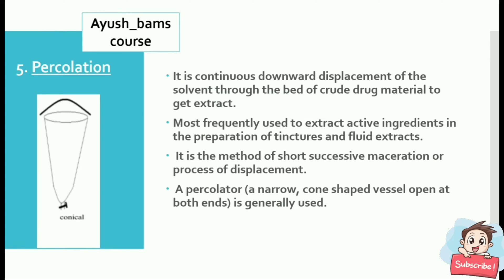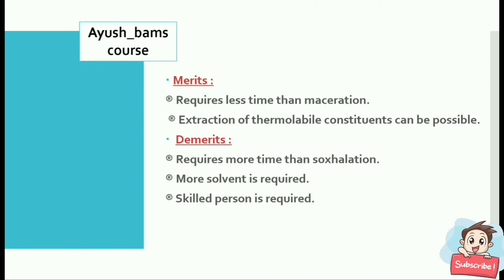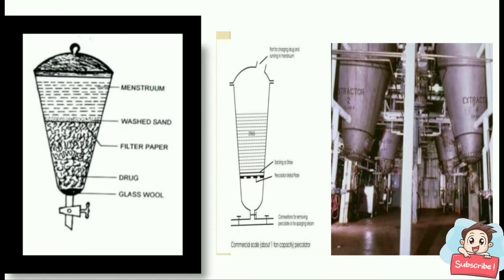The fifth method is percolation — a continuous downward displacement of the solvent through the bed of crude drug material to get the extract. It is most frequently used to extract active ingredients in the preparation of tinctures and fluid extracts, and is a method of successive maceration or displacement. A percolator is a narrow cone-shaped vessel open at both ends. The advantages are it requires less time than maceration and extraction of thermolabile constituents is possible. Disadvantages are it requires more time than Soxhlet extraction, more solvent is required, and a skilled person is required.